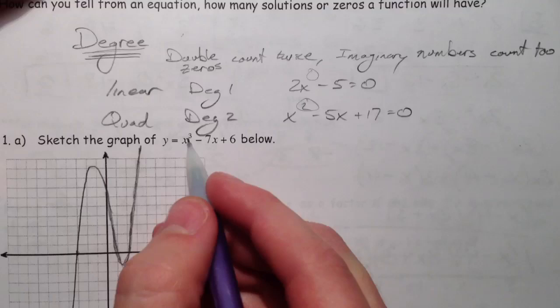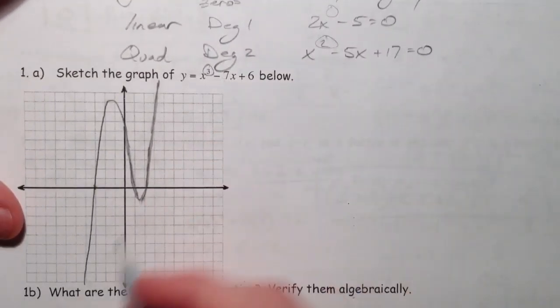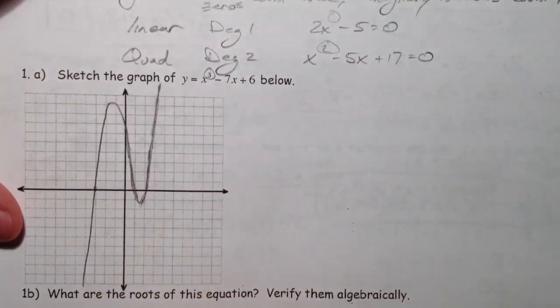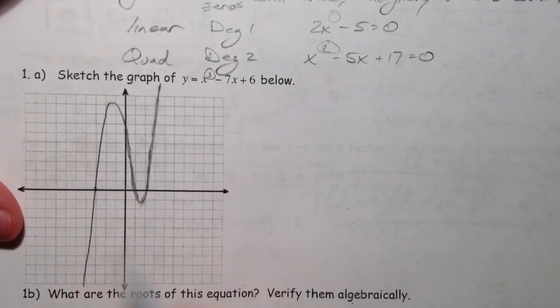For example, this x cubed minus 7x plus 6, the graph looks like this. It has three solutions.